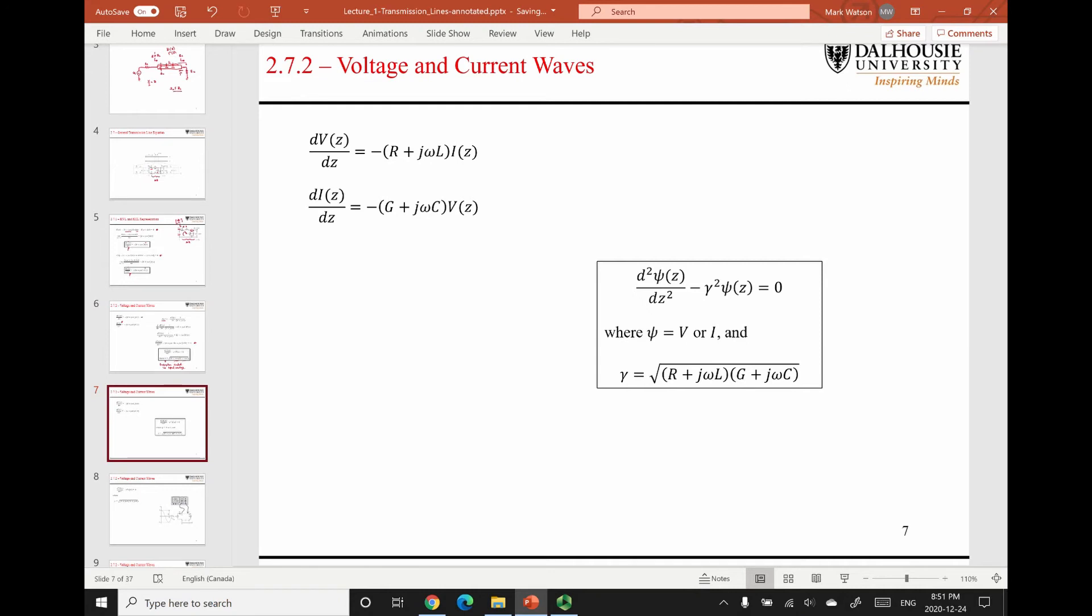So you could have done the same thing with the second transmission line equation. You could solve for the voltage, plug it in here, kind of chug through the calculations. And the point is that you end up with another wave equation. So you end up with two wave equations, one for voltage and one for current.